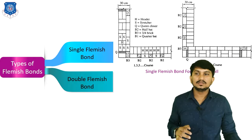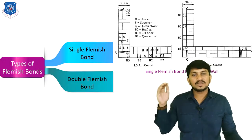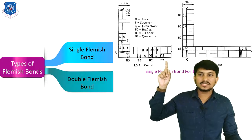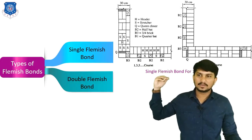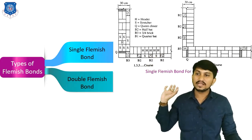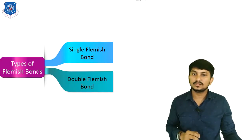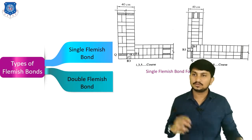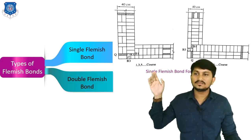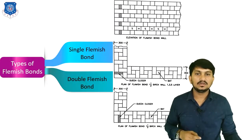In single Flemish bond, only one part — either facing or backing — has the Flemish pattern. At the facing, one stretcher then one header alternates, but at the backing, only headers are used. This is called single Flemish bond, where only the facing part shows the Flemish pattern. This is the single Flemish bond for a two brick wall, where the first course and second course arrangement is shown.